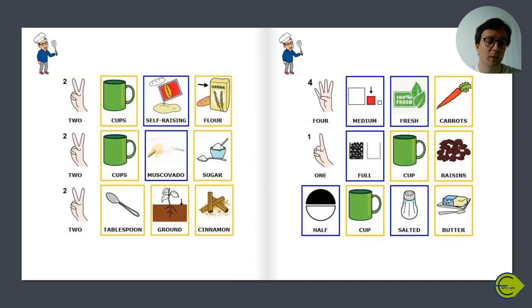2 cups self-raising flour, 2 cups muscovado sugar, 2 tablespoon ground cinnamon, 4 medium fresh carrots, 1 full cup raisins.